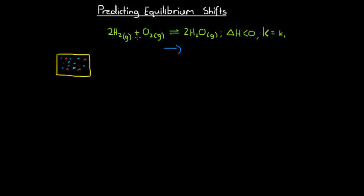The second option is that there is a net backwards reaction — we're reducing the amount of water and increasing the amount of hydrogen and oxygen. The last option is very unlikely, but it may happen that the amounts placed in the container are exactly right such that the system is already at equilibrium, so there is no net reaction and everything stays the same. How can we figure out which of these is going to occur?